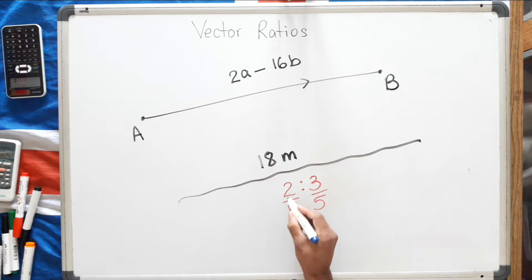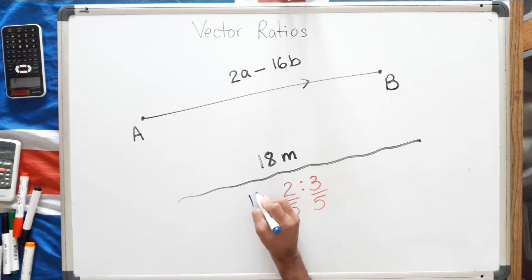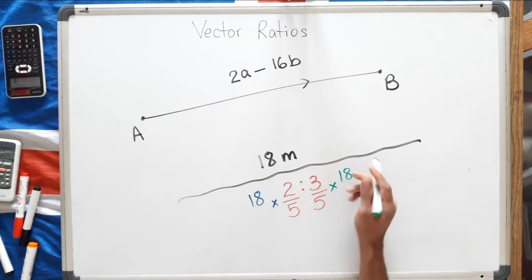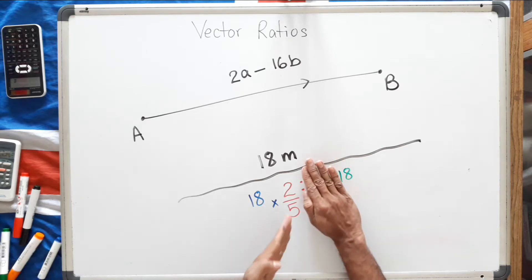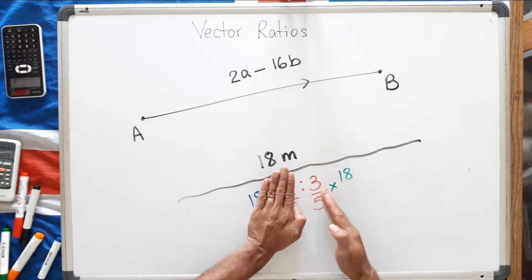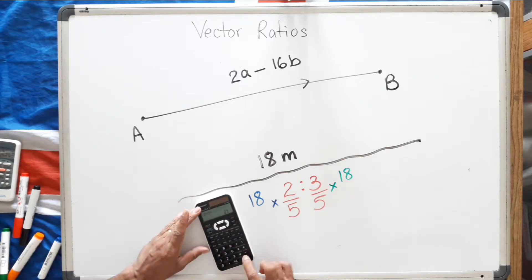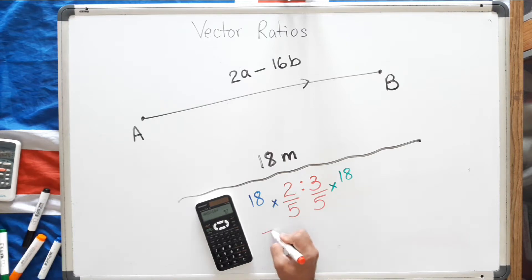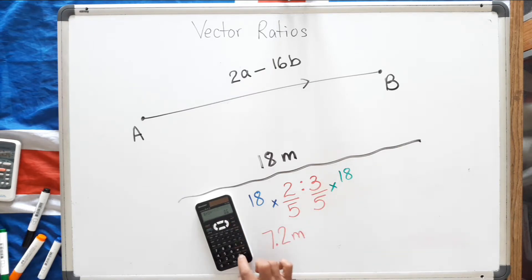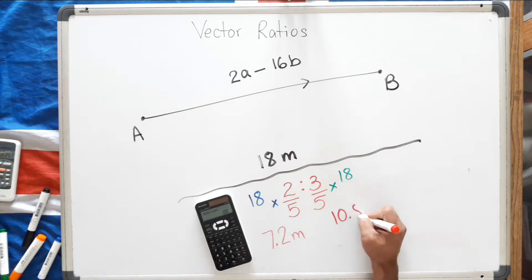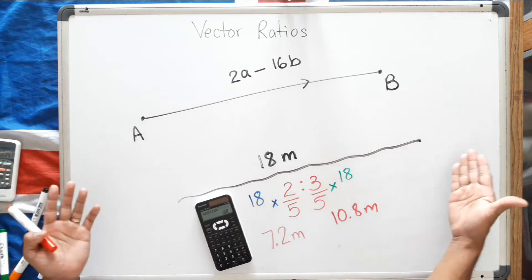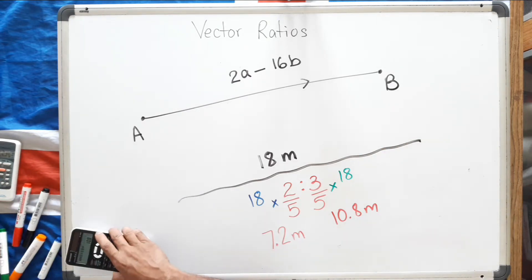To find 2 fifths of something, take 2 fifths and multiply it by the total length — which is 18. To find 3 fifths, take 3 fifths and multiply by 18. So 2 fifths multiplied by 18 gives 7.2 meters, so one person gets 7.2 meters. And 3 fifths multiplied by 18 gives the other person 10.8 meters. It's really simple when we're dealing with a length. Now let's have a slightly different situation.